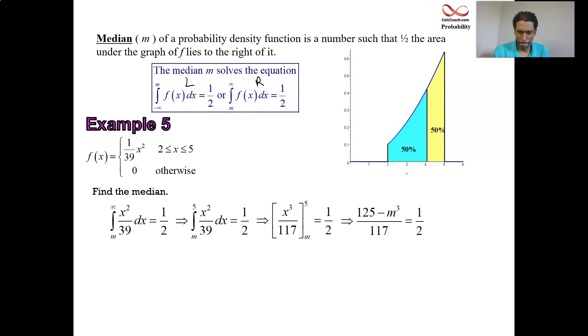Cross-multiply. 250 minus 2M cubed is 117. 2M cubed is 250 minus 117, which is 133. Divide by 2. Take a cube root. M is equal to the cube root of 133 over 2. A little more than 4 in my drawing there. You can see it in the computer drawing. So that's it.